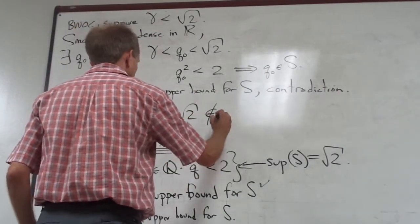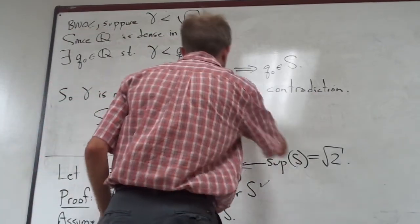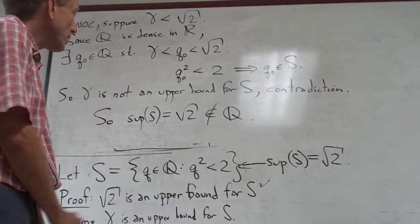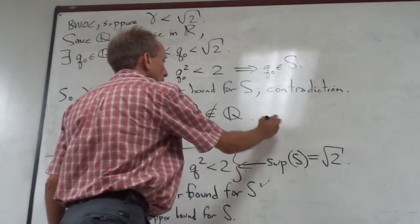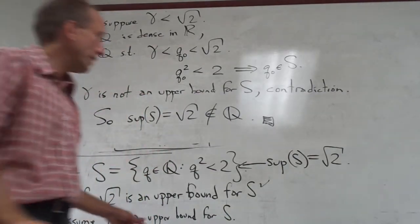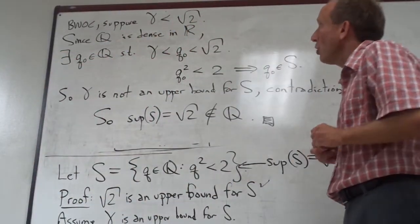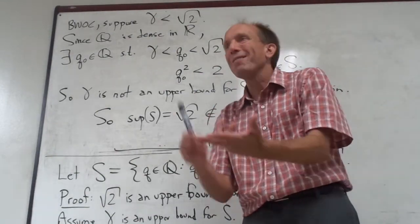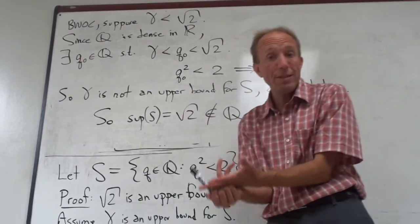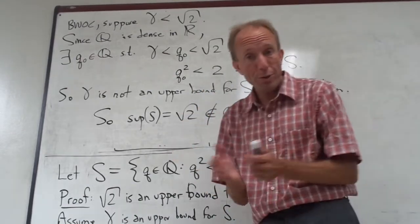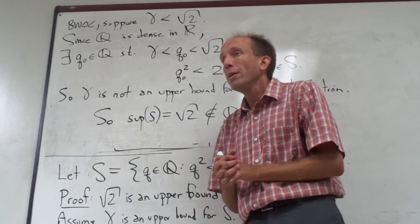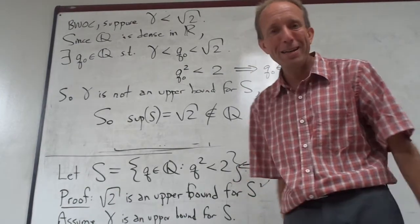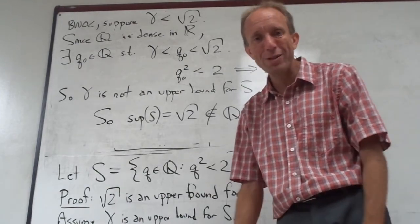The supremum of S is the square root of 2, which is not an element of S itself — in fact, it's not an element of Q at all. That's a nice little example following up what I had said in class, using the fact that Q is dense. The main things I want you to get out of this video are the definition of density, the fact that Q is dense in R, and the Archimedean principle — that's one we're going to be using multiple times going forward. Hope this all makes sense. If not, be sure to come ask me, and I'll see you guys again soon. Thanks.